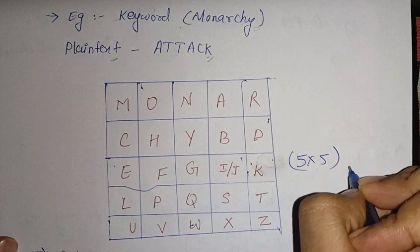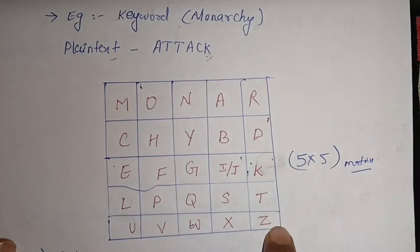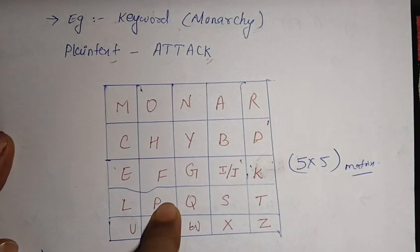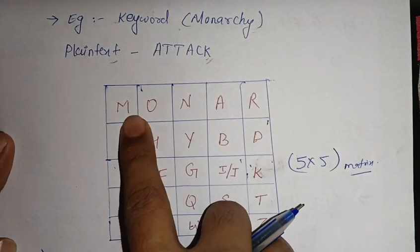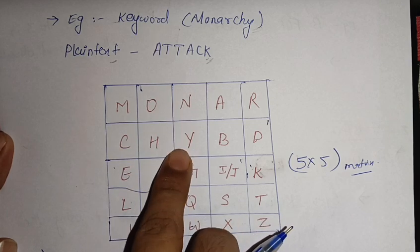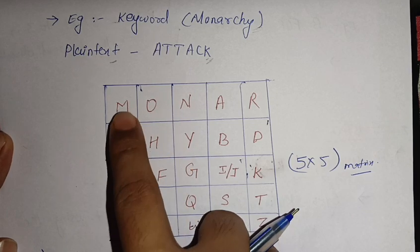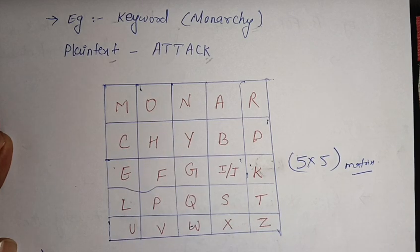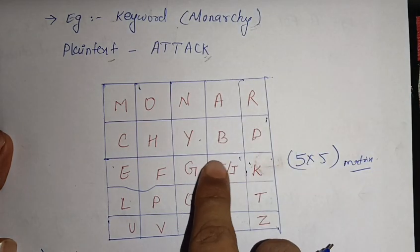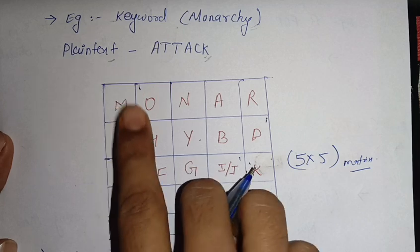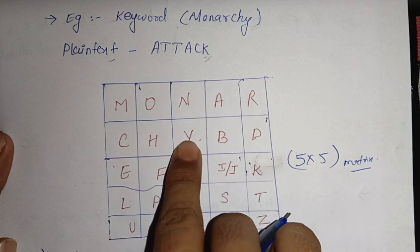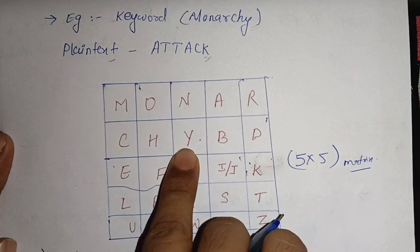After making the 5x5 matrix, we need to first fill in the keyword. Our keyword is 'monarchy', so we write M, O, N, A, R, C, H, Y. One thing to keep in mind: each letter should not be written more than once. All the letters in 'monarchy' are unique, so we have written all of them.